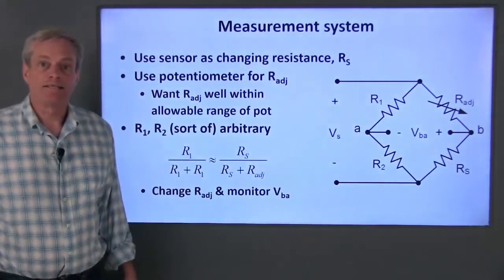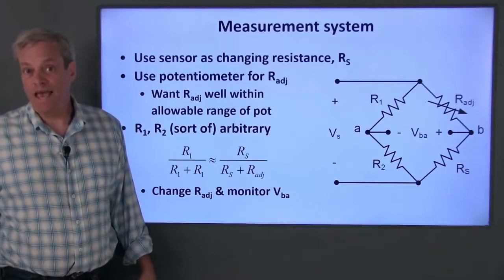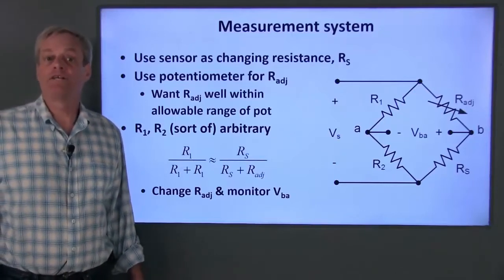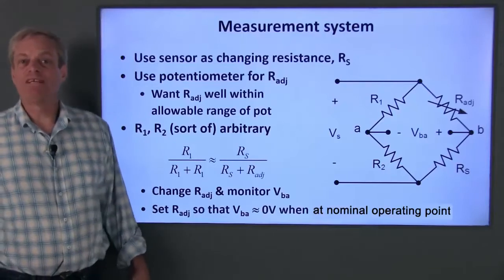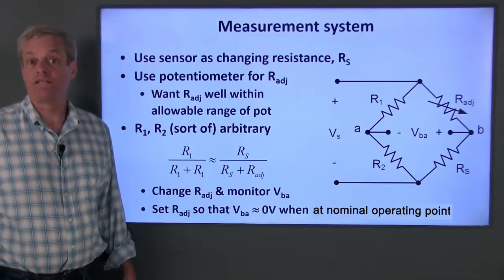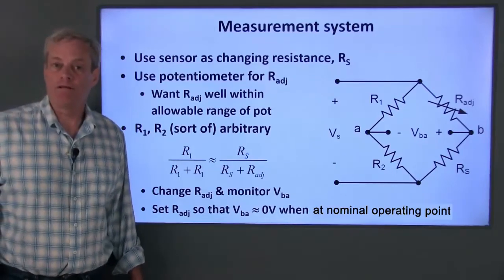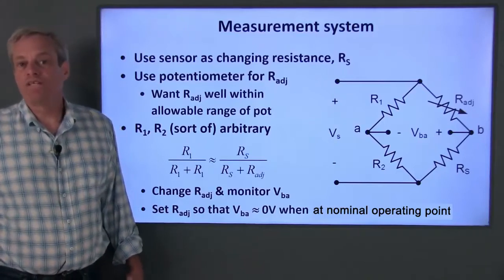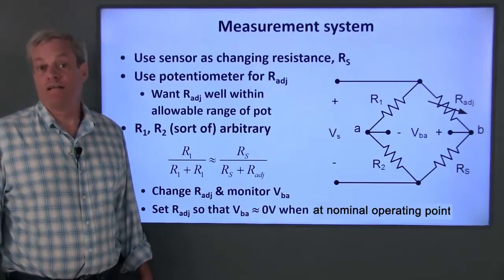To balance the bridge circuit, I can set the value of the pot resistance by monitoring the voltage V sub Ba with a voltmeter while I adjust the potentiometer's resistance. If I use this approach, I don't really care what value the pot resistance actually is. I just change the potentiometer position until the measured voltage is zero when the sensor is at its nominal operating point. I just need to make a reasonable first guess for the resistances and then the potentiometer can do the fine tuning for me.